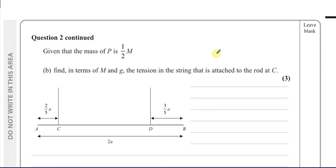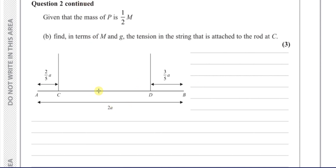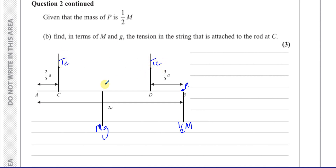Now for Part B: given that the mass of P is one-half M, find in terms of M and G the tension in the string attached to the rod at C. This is a different situation — we now know the mass of the particle at B is one-half M, so its weight is one-half MG. The rod is uniform, so the weight MG still acts at the center. We have tensions TC and TD, and we need to find TC.